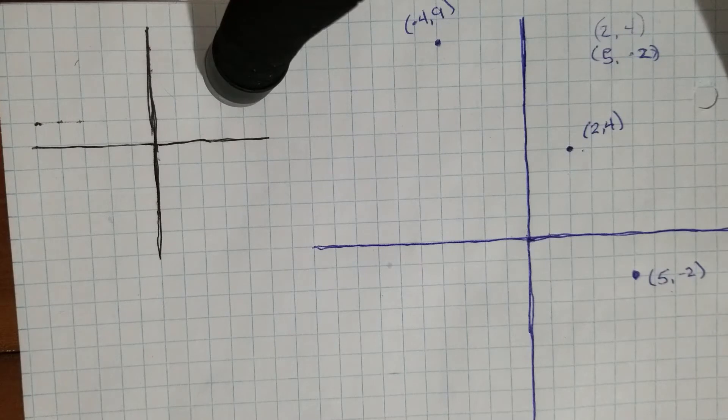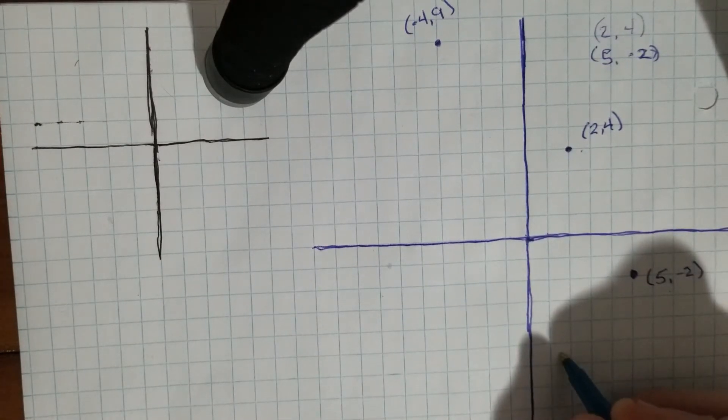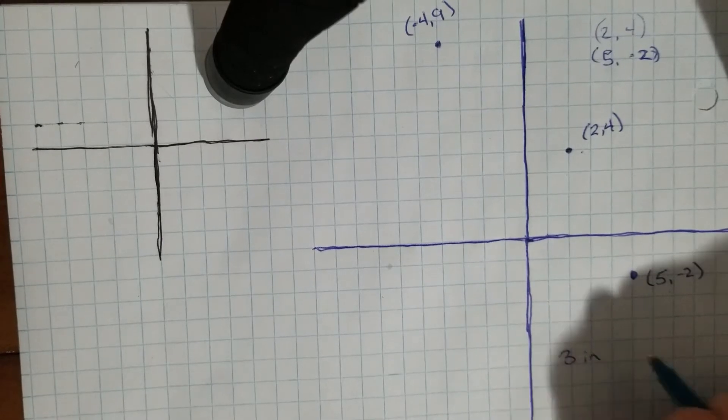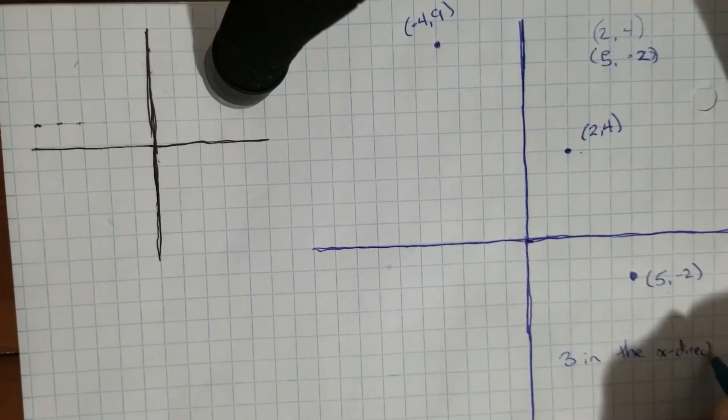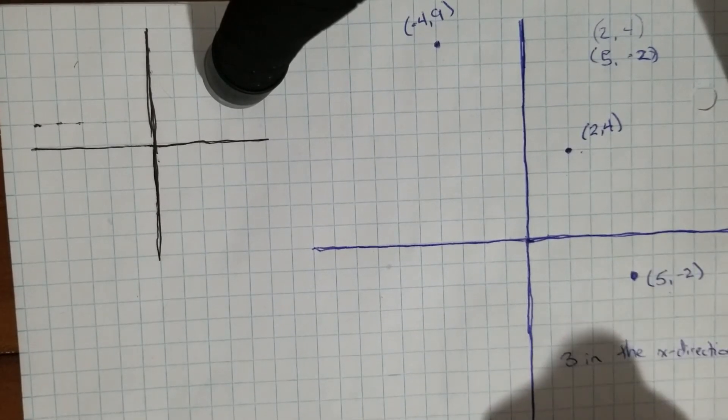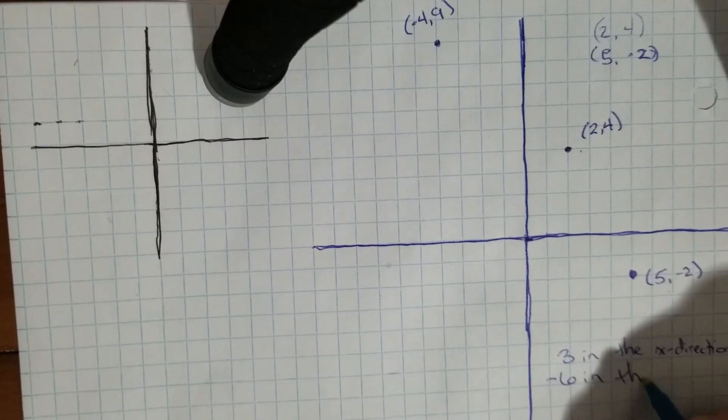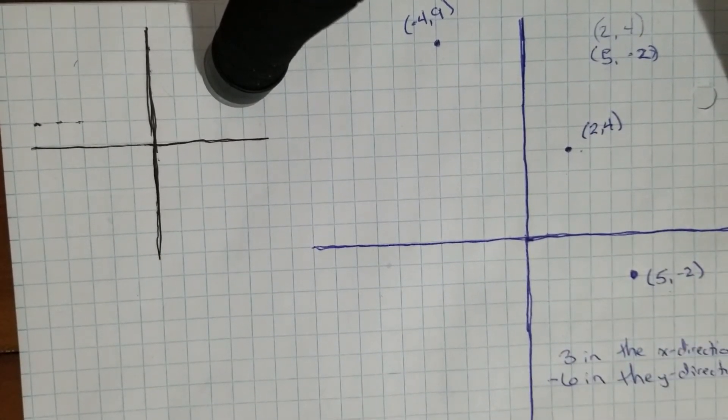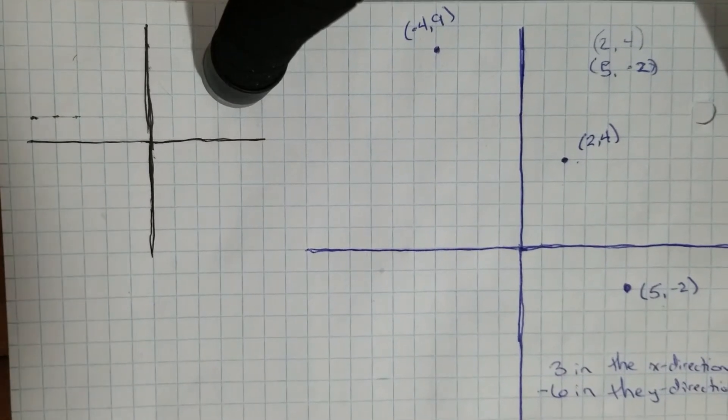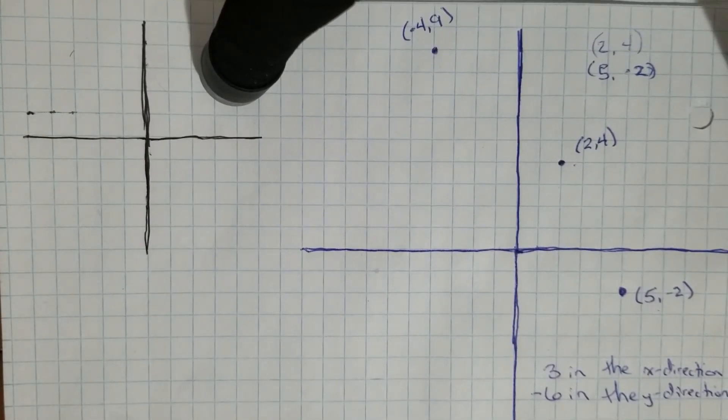So describing the translation for this question, we could say here that we are going three in the X direction and we're going negative six in the Y direction. All right, now we have the explanation for our translation, what we call translation T. So that's part A done.